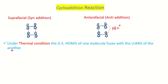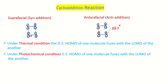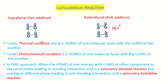Cycloaddition reactions can occur under either thermal or photochemical conditions. Under thermal conditions, we take the ground state HOMO of one molecule and the LUMO of the other molecule. Under photochemical conditions, we take the excited state HOMO of one molecule which fuses with the LUMO of the other molecule. This is the key distinction to remember for determining which orbitals to use.